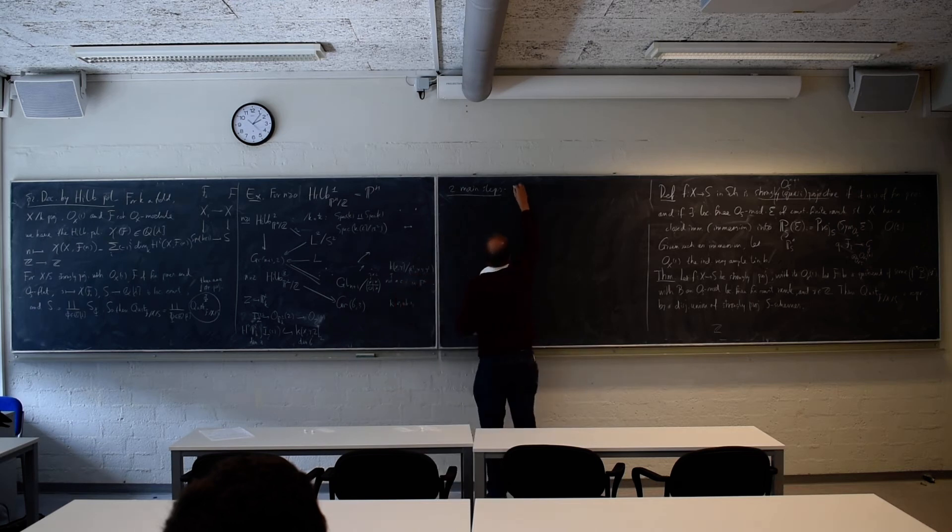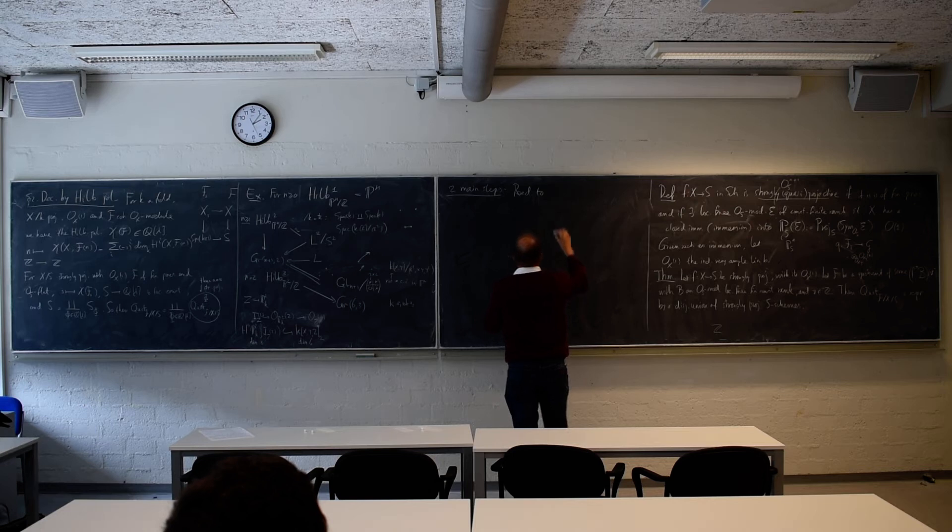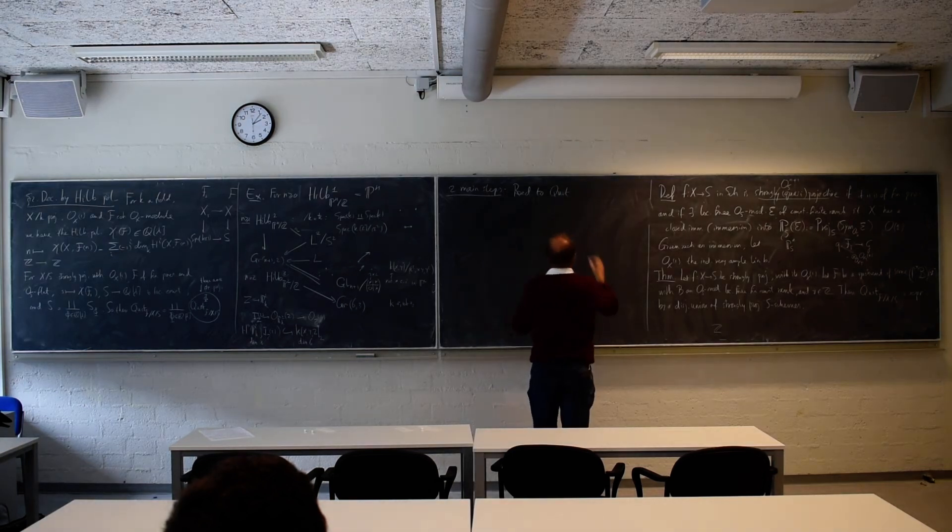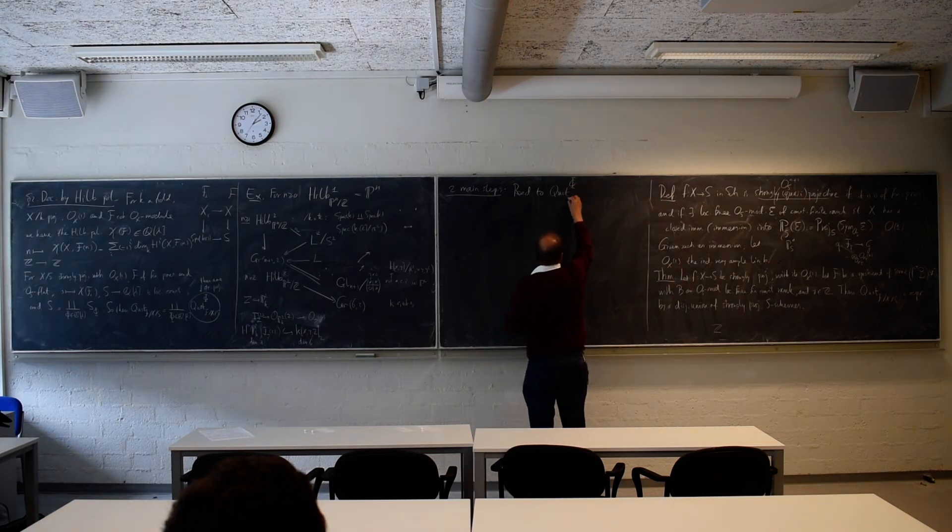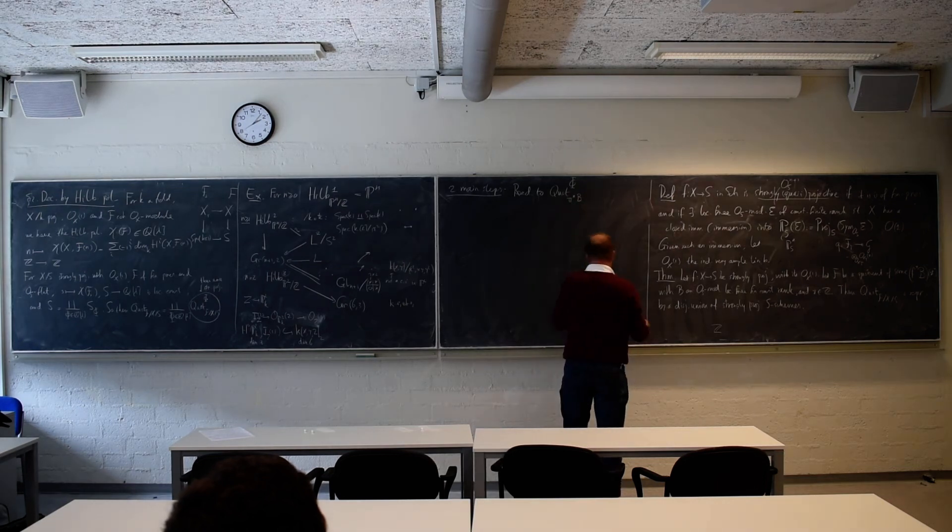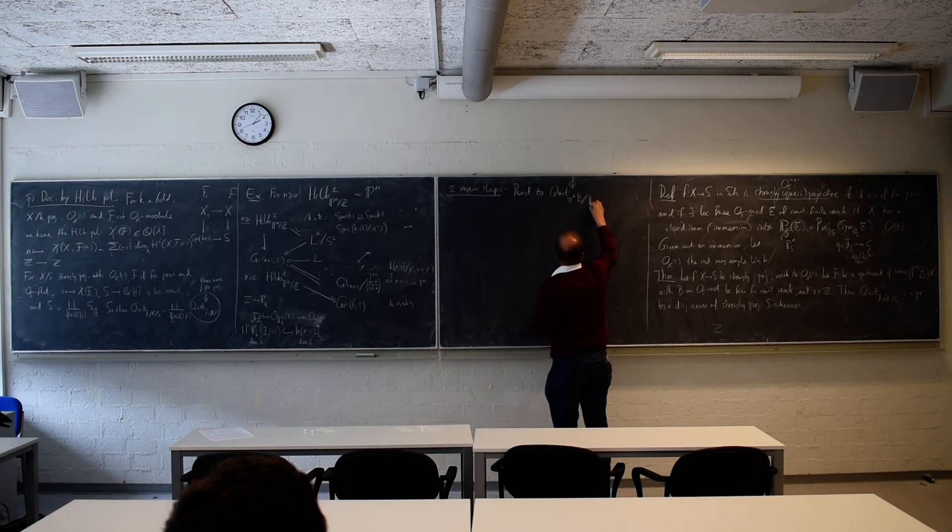So two big steps. And the first is reduction. Reduction to something... Well, of course, we no longer talk about the Hilbert scheme, only about quot schemes. And actually, that allows us to forget x.